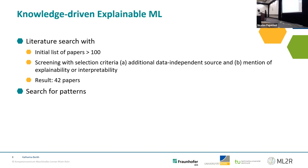How we did that was to conduct a literature search, gaining an initial list of more than 100 papers. We screened them with two selection criteria: we needed a data-independent source distinct from the training data, and the papers needed to mention at least explainability or interpretability as their goal. This resulted in 42 papers, and we searched for patterns to see whether there are similarities.